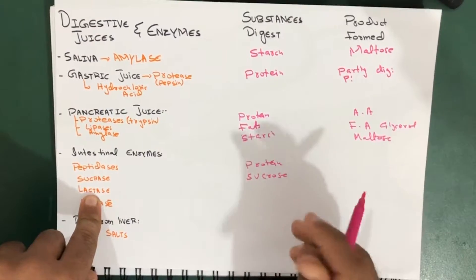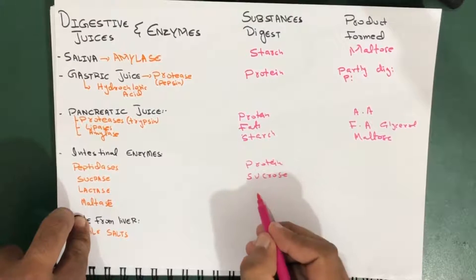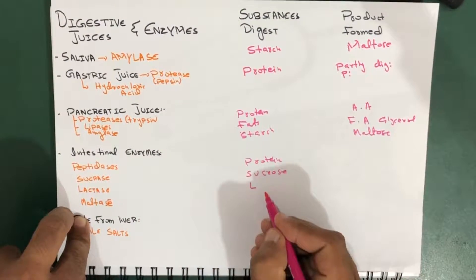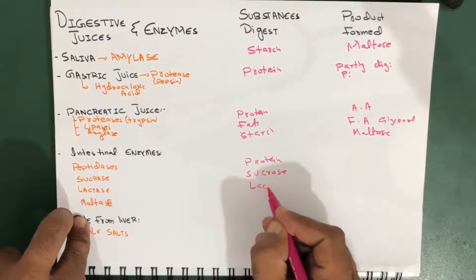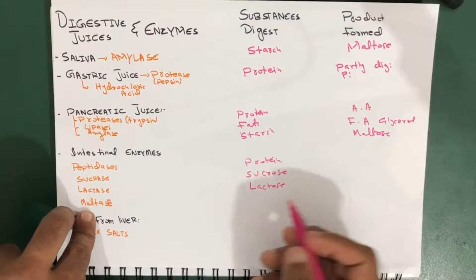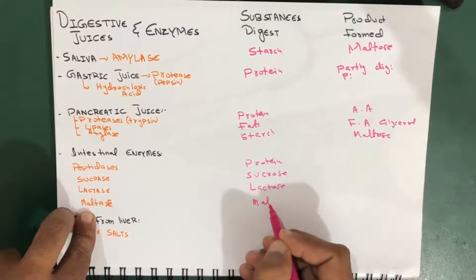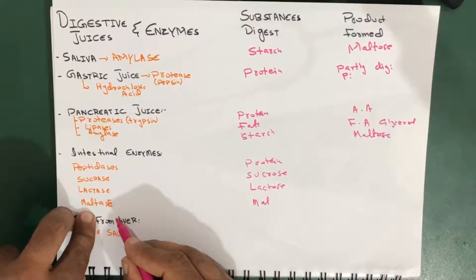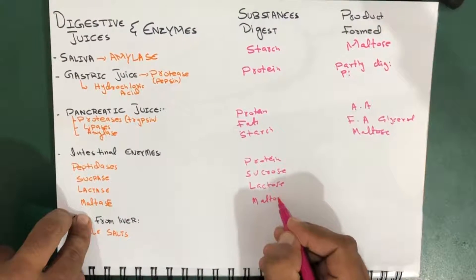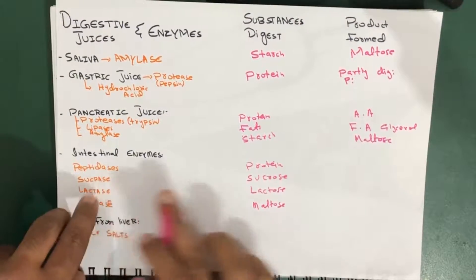We also have lactase, which digests lactose — lactose is a milk sugar. And maltase digests maltose. So to summarize the intestinal enzymes: peptidases convert protein into amino acids.